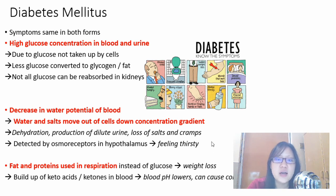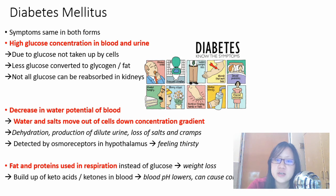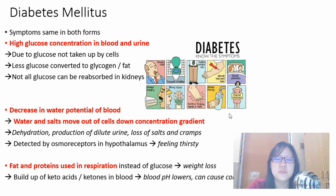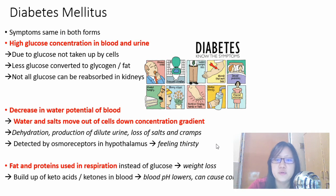Because glucose is not taken up into cells and remains in the blood, cells often use fat and proteins in respiration instead of glucose, resulting in weight loss. As proteins are used in respiration, there is a build-up of ketoacids or ketones in the blood, causing blood pH to lower, and in severe cases this can cause coma. Other symptoms include fatigue, constant hunger, blurry vision, frequent urination, sexual problems, and vaginal infections.